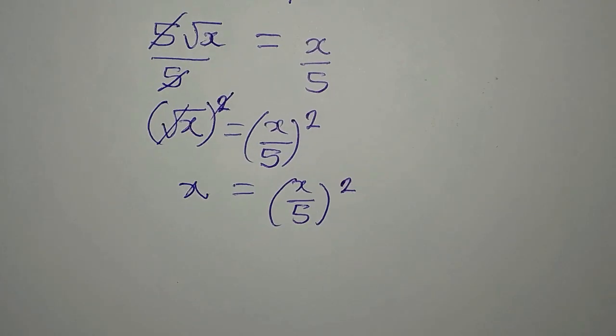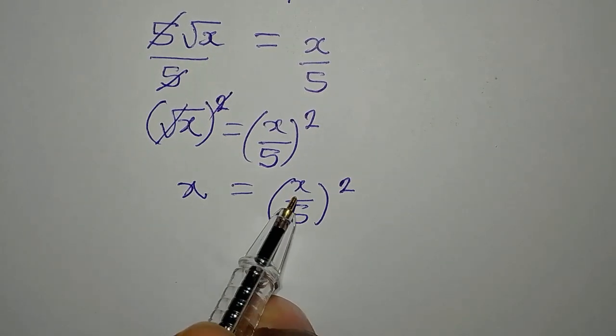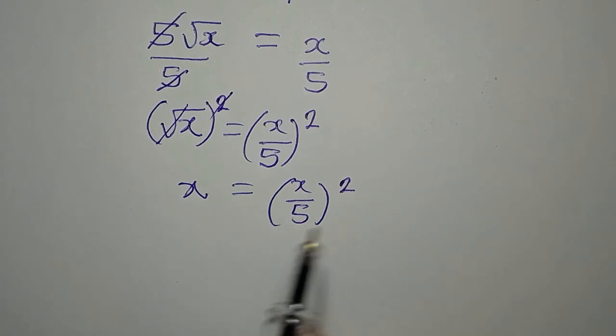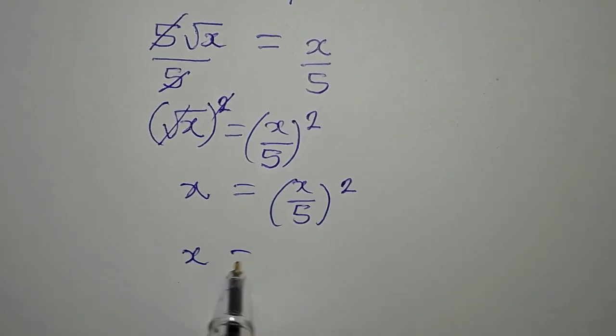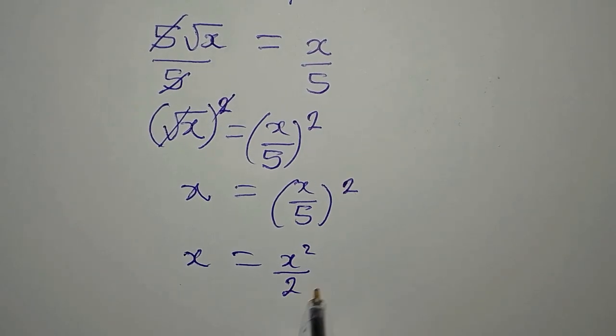And if you must know, this square can be distributed for the numerator and the denominator. So this is x equals x squared over 5 squared. And 5 squared is 25.